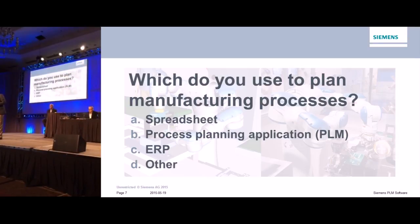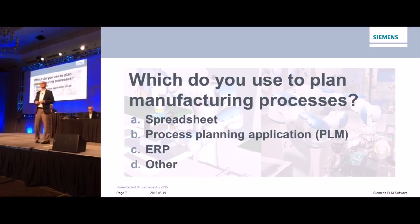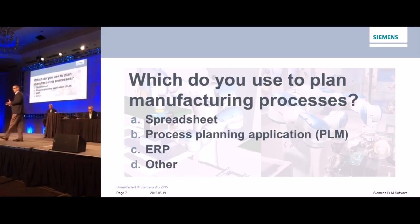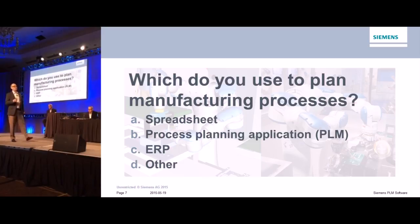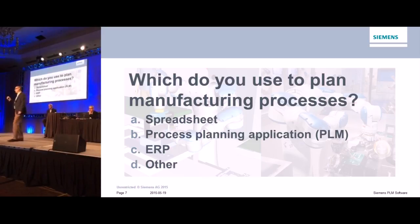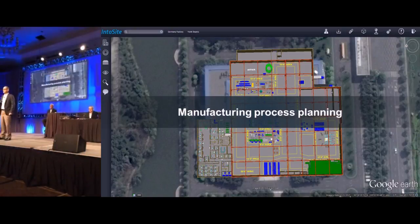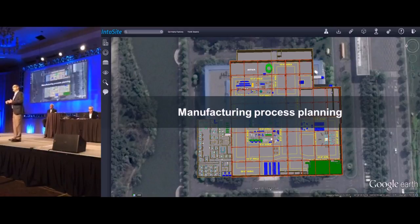We often hear how product design and production get out of sync, which can lead to costly late changes and even production delays. Many companies use spreadsheets to make their manufacturing plans, and others use their ERP system, but both of these tools lack a live digitalized connection to the product bill of materials and design information. In this next vignette, we'd like to show you a better way to define a manufacturing plan.